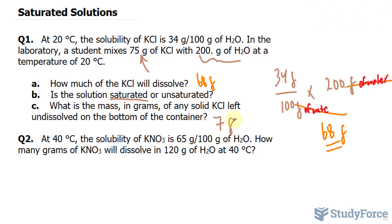Moving on to question 2. At 40 degrees Celsius, the solubility of potassium nitrate is 65 grams per 100 grams of water. How many grams of potassium nitrate will dissolve in 120 grams of water at 40 degrees? So once again, I'll take 65 grams per 100 grams of water and multiply that to 120 grams of water.